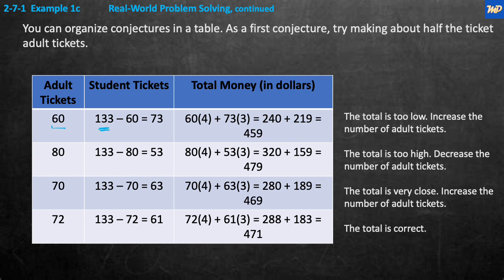With 60 adult tickets at $4 and 73 student tickets at $3, we get $240 plus $219, which equals $459. But $459 is less than the $471 we need, so something has to increase. We're going to increase the adult tickets and try another number. We're trying, testing, and now revising — let's try 80 adult tickets.